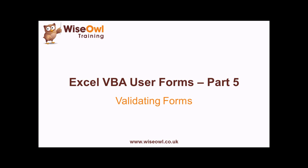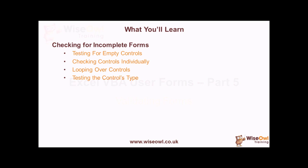Welcome to part 5 of this Excel VBA User Forms tutorial. We're going to continue the theme of validating forms, picking up where we left off in the previous part. This time, rather than checking individual controls for specific rules, we're simply going to be checking whether the entire form has been completed. We'll talk about how you can test for empty controls, and we'll take two different approaches to doing that — checking controls individually using separate if statements, and also looping over all the controls on the form to test everything in one single sweep.